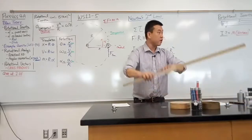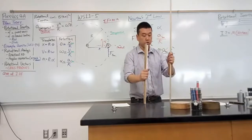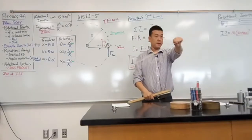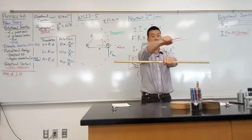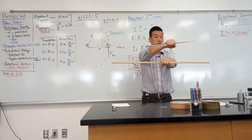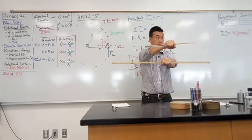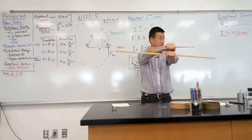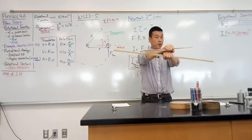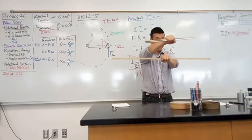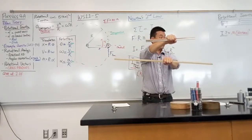If the center of mass could be used to describe the whole object, then a solid cylinder and a thin hoop would have the same rotational inertia — because their centers of mass are the same. But you know from experience that they have different rotational inertia.